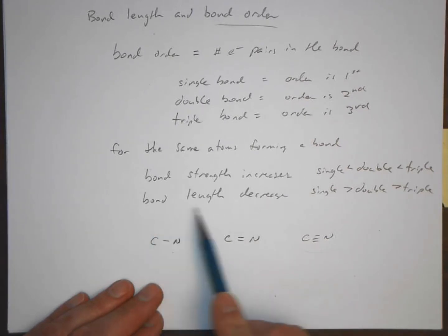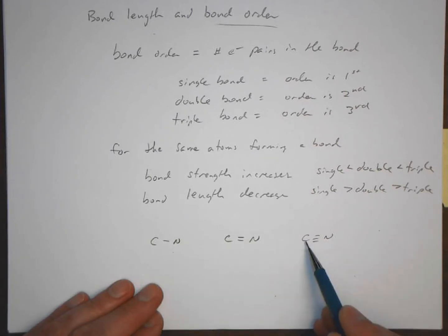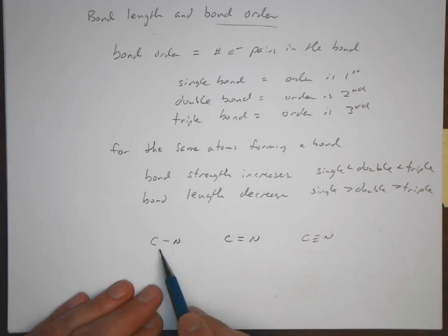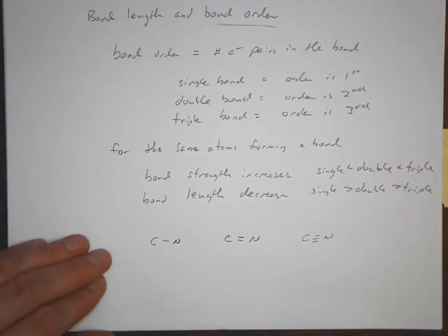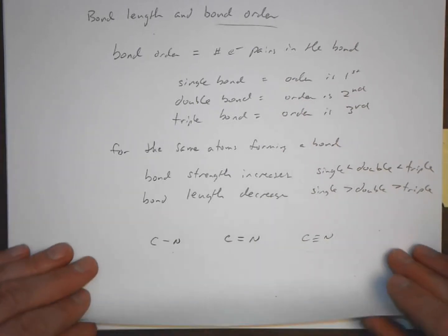The bond length decreases as we go from single, double, to triple. The internuclear distance between the carbon and the nitrogen here in a triple bond is going to be smaller than the internuclear distance for a carbon-nitrogen single bond. Relatively straightforward, and maybe even intuitive.